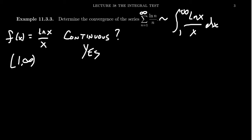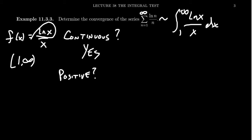Is it a positive function? Well, x is positive when we're greater than 1. The natural log is also positive when x is greater than 1 — it's negative between 0 and 1. So on the interval in question, the natural log is positive, x is positive, and therefore the ratio will be positive. So yes, the function is positive.